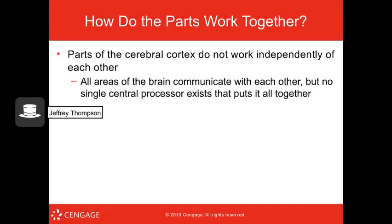Even though we talk about different parts of the brain, they don't work independently — they all communicate with each other and contribute together to who we are and how we behave. No one thing controls all parts of the brain.